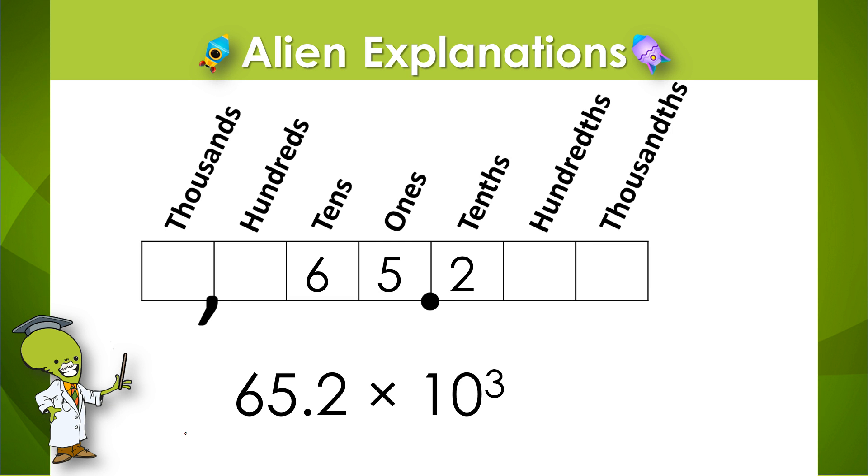So in this example, we have 65 and 2 tenths being multiplied by 10 to the power of 3. So 65 and 2 tenths is going to be multiplied by 10 three different times, which means that each digit in that number will move up three place value positions. So 65 and 2 tenths times 10 to the power of 3 is actually 6,520.